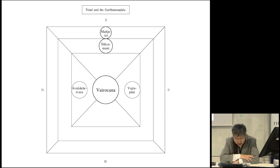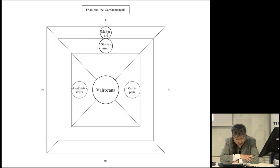However, the structure of the third square of the Garbha Mandala, which arranges Sarvanivarna-Vishkambhin, Akashagarbha, and Kshitigarbha in the south, west, and north respectively, is difficult to explain on the basis of three families. Next I wish to consider the arrangement of the bodhisattvas in the Garbha Mandala.